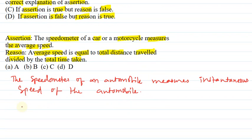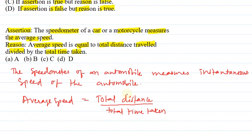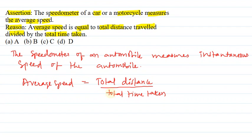Let us see reason. Average speed is equal to total distance divided by total time. So, reason correct hai or assertion wrong hai.